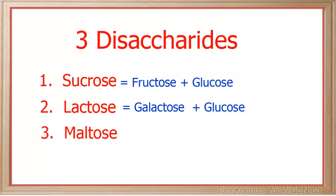The third disaccharide is called maltose, and it is made from two glucose molecules. Notice that glucose is at least one of the building blocks for all three disaccharides. You will hear a lot about maltose while studying the digestive system, as maltose is produced in the first step of the breakdown of starch.